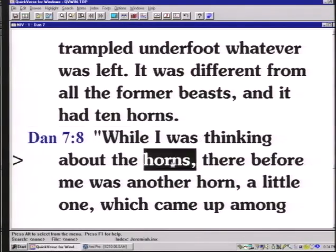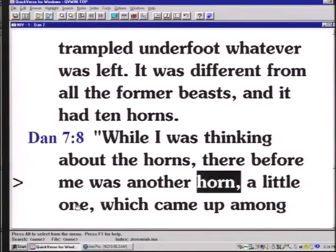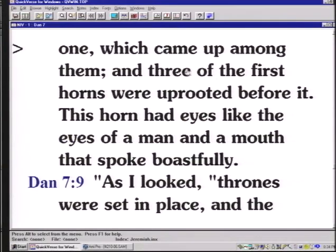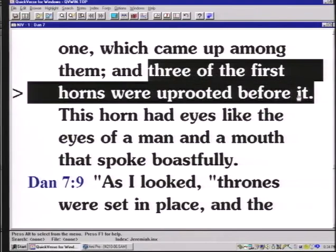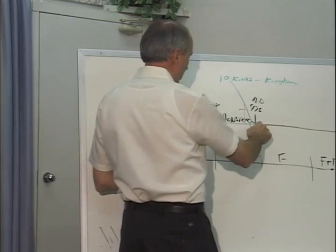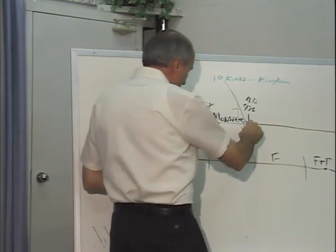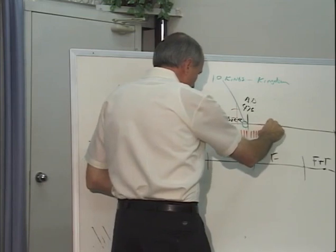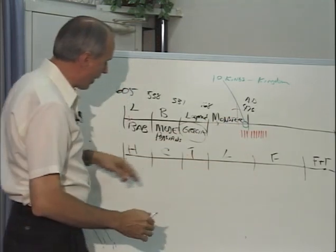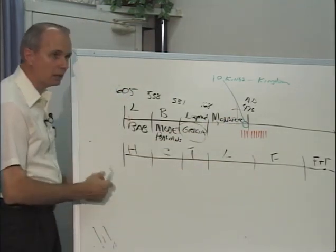While I was thinking about the horns, there before me was another horn, a little one, which came up among them, and three of the first horns were uprooted before it. Well, Daniel is watching this and watch this up here on the screen here for a minute on the board. There are ten horns. One, two, three, four, five, six, seven, eight, nine, ten.